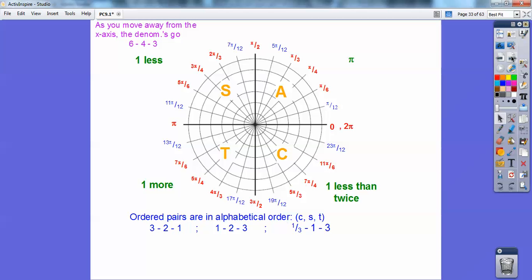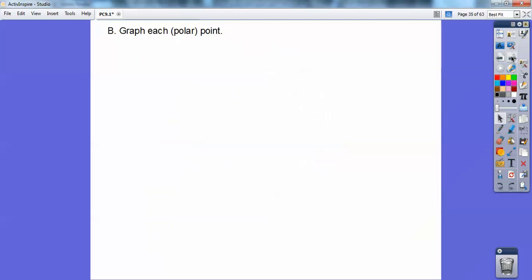Cosine goes 3, 2, 1. Sine goes 1, 2, 3. Tangent goes 1 third, 1, 3. Just remember the 1 third is root 3 over 3, and 3 is root 3, the 2 is root 2 over 2, and then 1 is 1 over 2.